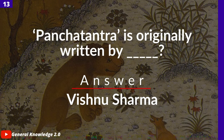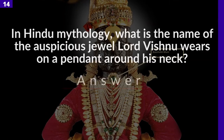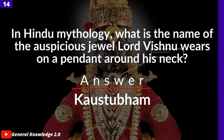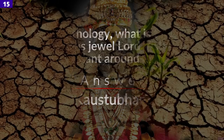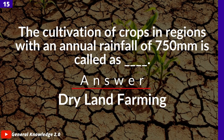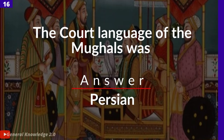Panchatantra was originally written by — answer: Vishnu Sharma. In Hindu mythology, what is the name of the jewel Lord Vishnu wears on a pendant around his neck? Answer: Kaustubha. The cultivation of crops in a region with an annual rainfall of 750 mm is called — answer: dry land farming.